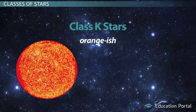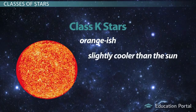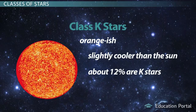Class K stars are orange-ish stars that are slightly cooler than the sun. They make up about 12% of stars.